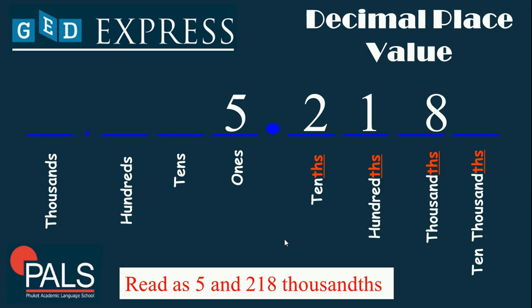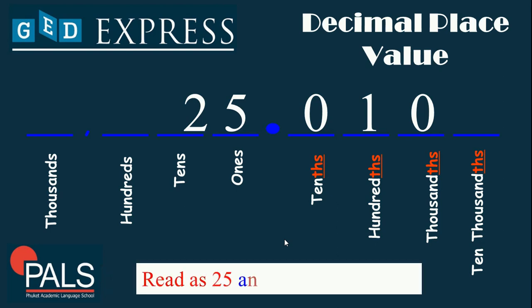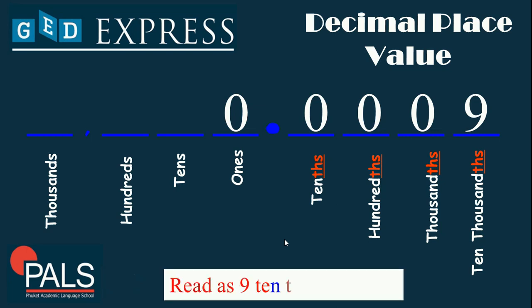It's good that you know how to read decimals correctly. Suppose we have 25.010 — we read that as '25 and 10 thousandths.' And if we have 0.0009, we read that as '9 ten-thousandths.'